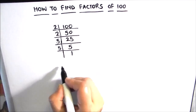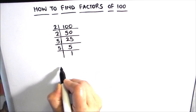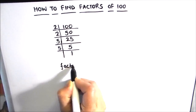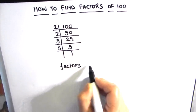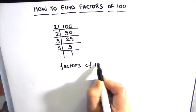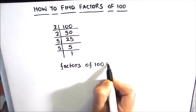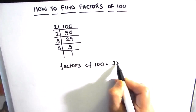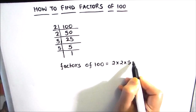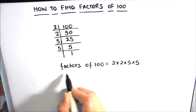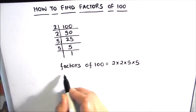Our number is fully divided and the factors of 100 will be all the numbers which are on the left-hand side of the ladder. So the factors of 100 are 2 times 2 times 5 times 5. These are all the factors of 100.